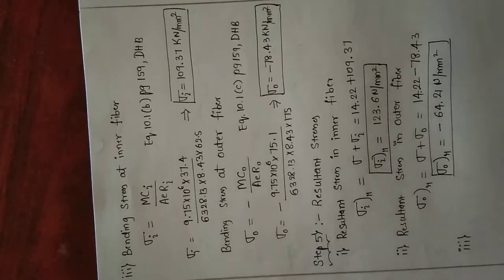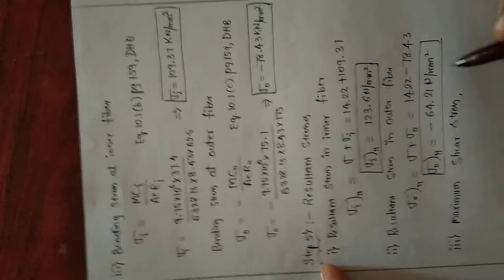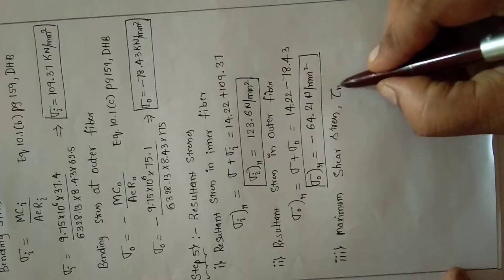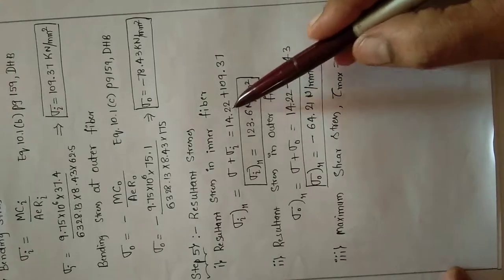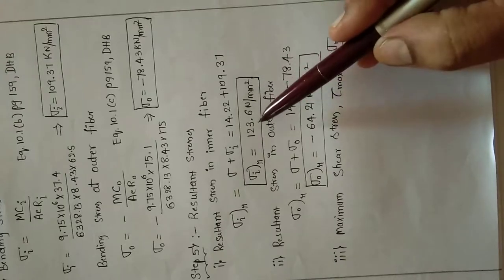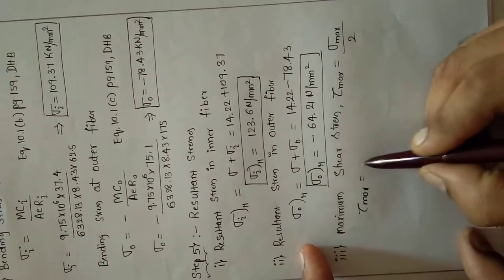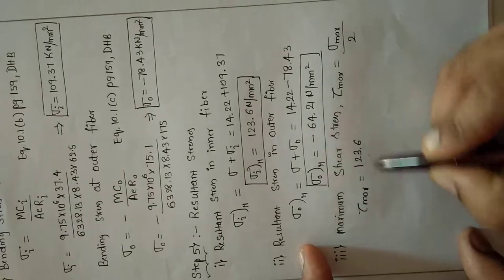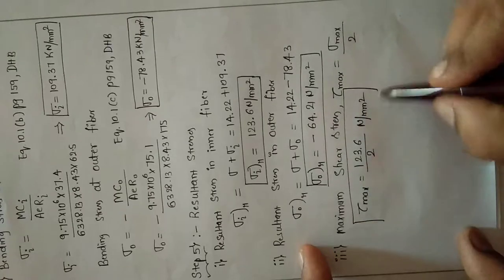We can also find the maximum shear stress. Tau-max equals sigma-max divided by 2. We have resultant stresses sigma-i-r and sigma-0-r; the maximum value is 123.6. So tau-max equals 123.6 divided by 2, giving tau-max in N/mm square.